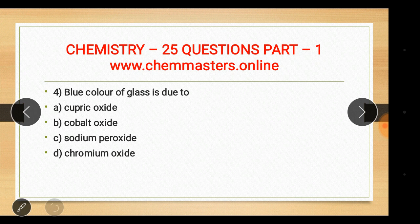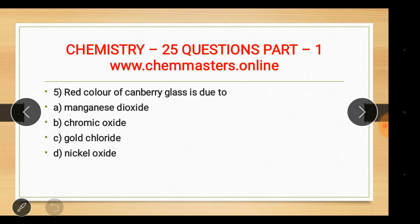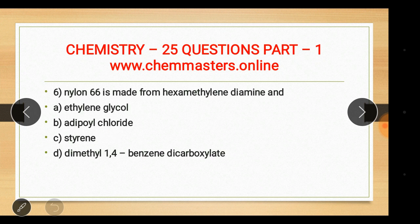Question five: the red color of cranberry glass is due to gold chloride — answer C. Manganese dioxide in glass gives a purple color, and nickel oxide imparts a violet color to glass.